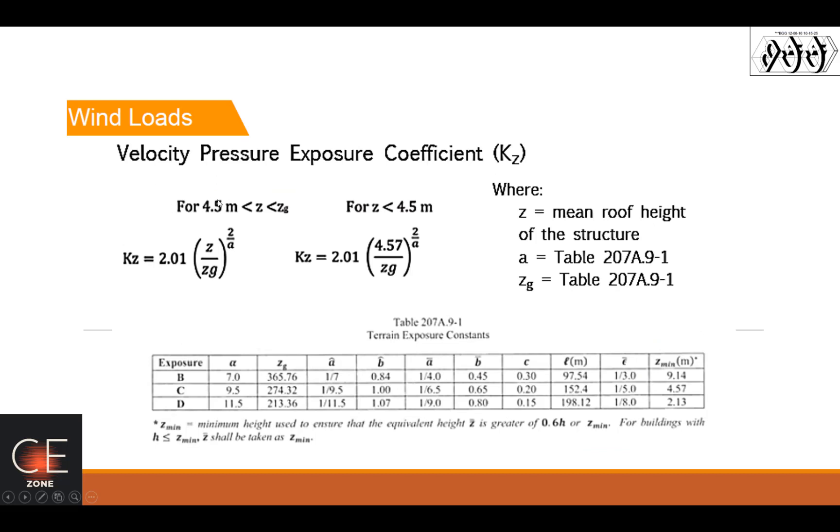So these are the formulas for you to get those specific values. For the KZ, if your height is less than 4.5, then you apply this formula.